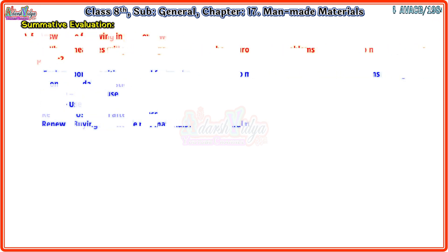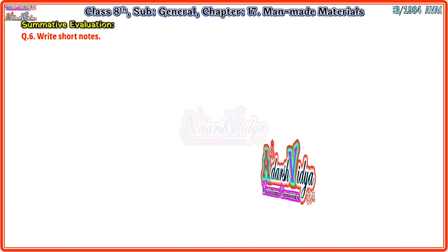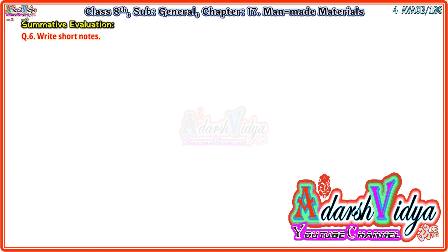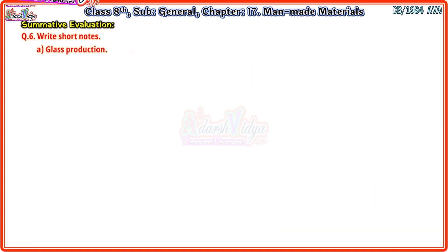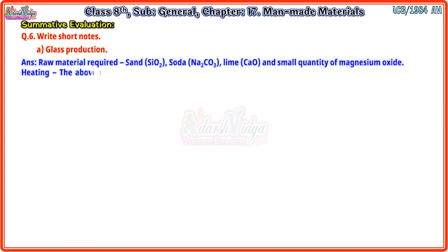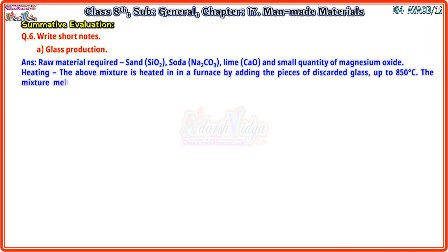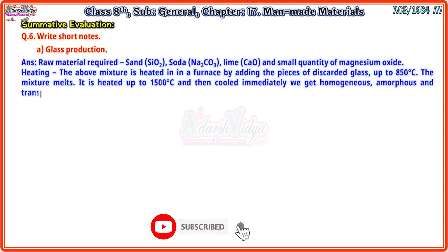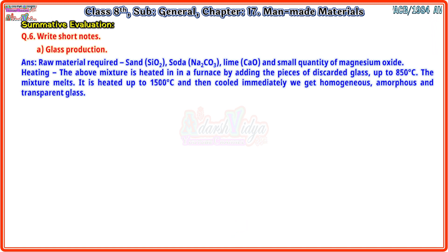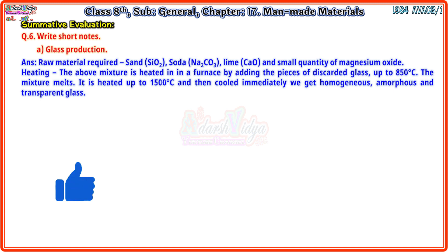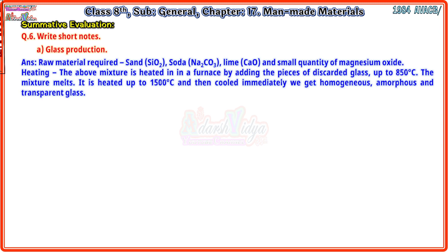Question 6 - Write short notes. First: Glass production. Raw materials required: sand (SiO₂), soda (Na₂CO₃), lime, chow, and small quantity of magnesium oxide. The above mixture is heated in a furnace by adding pieces of discarded glass up to 850 degrees Celsius. The mixture melts, then it is heated up to 1500 degrees Celsius, and then cooled immediately. We get homogeneous, amorphous and transparent glass.